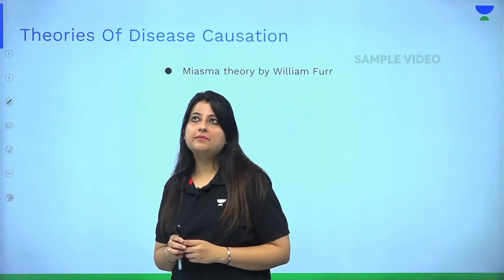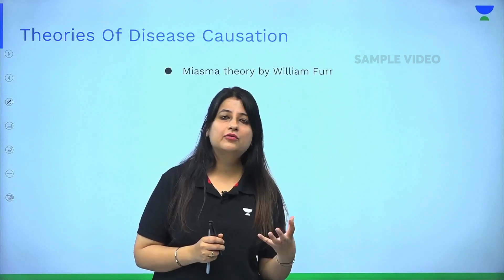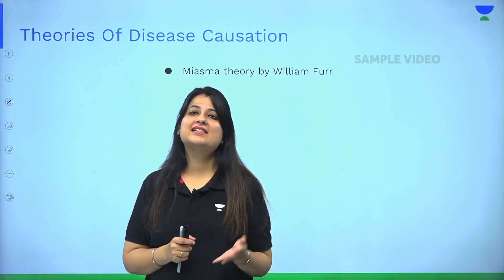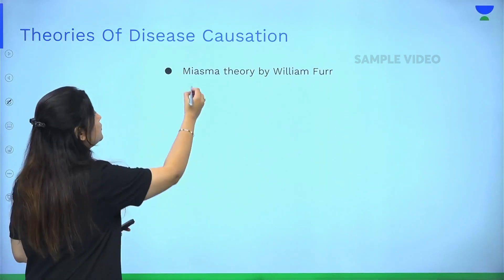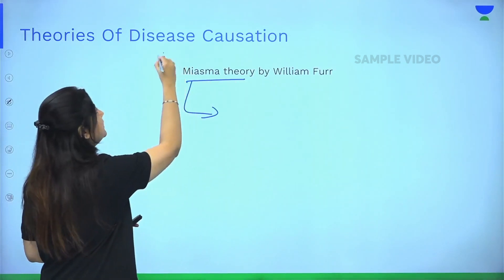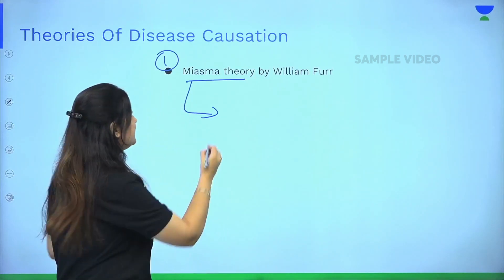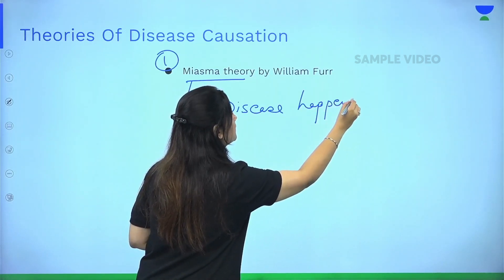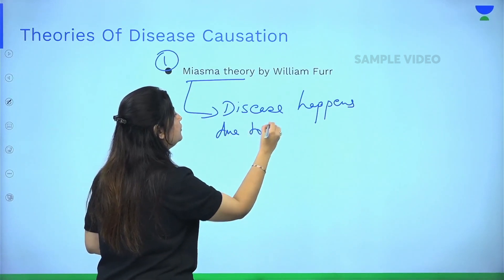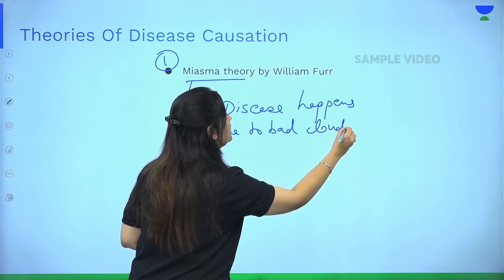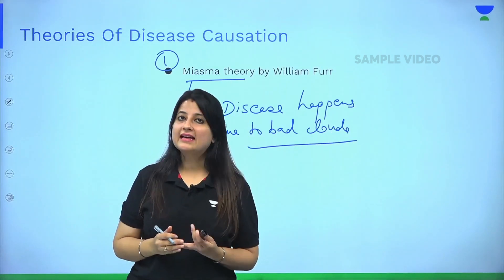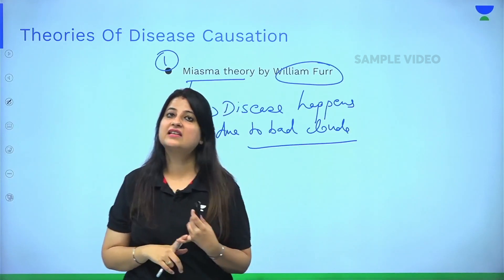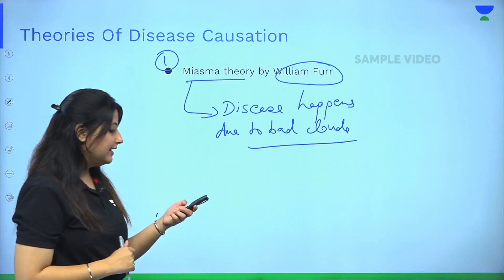The first theory: many times people tell us that your time is not right. Similarly, this first theory says that disease is happening due to bad clouds. That is the Miasma Theory — Theory number one. Miasma Theory says disease happens due to bad clouds, and it was given by scientist William Farr.